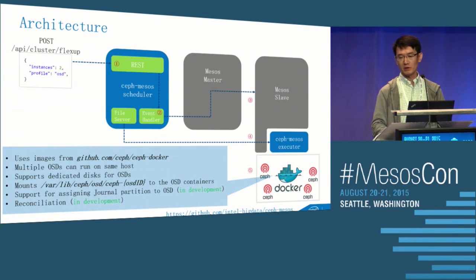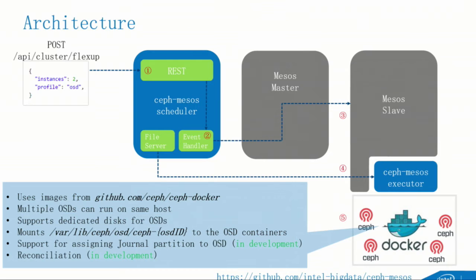Our implementation uses the Ceph Docker image from the Ceph Docker project. When you deploy a cluster, those images will be downloaded from Docker Hub on the fly, but you can always create a local private repository.